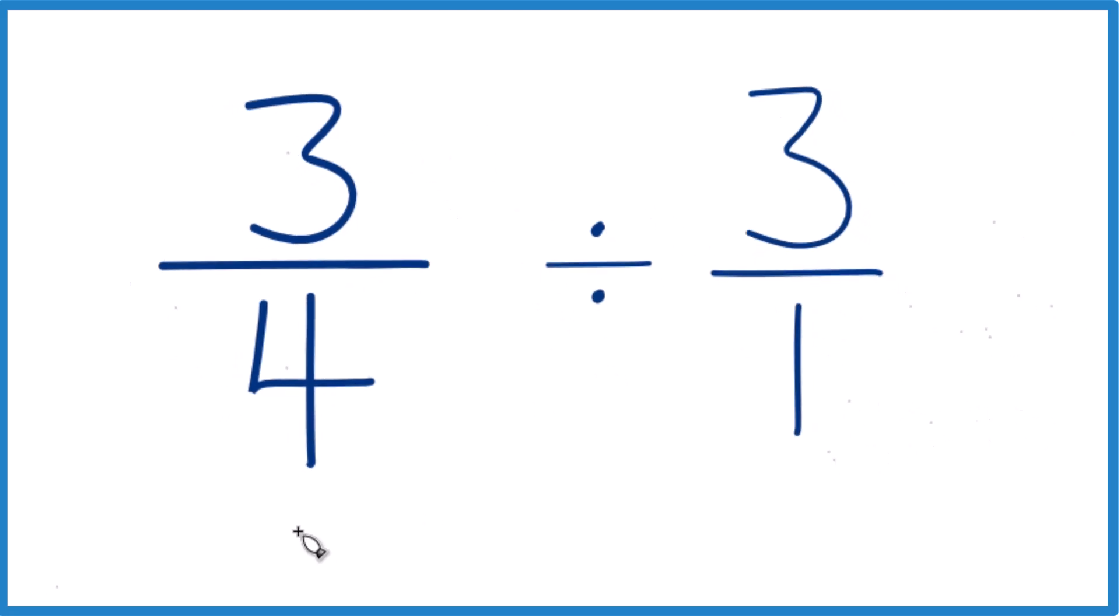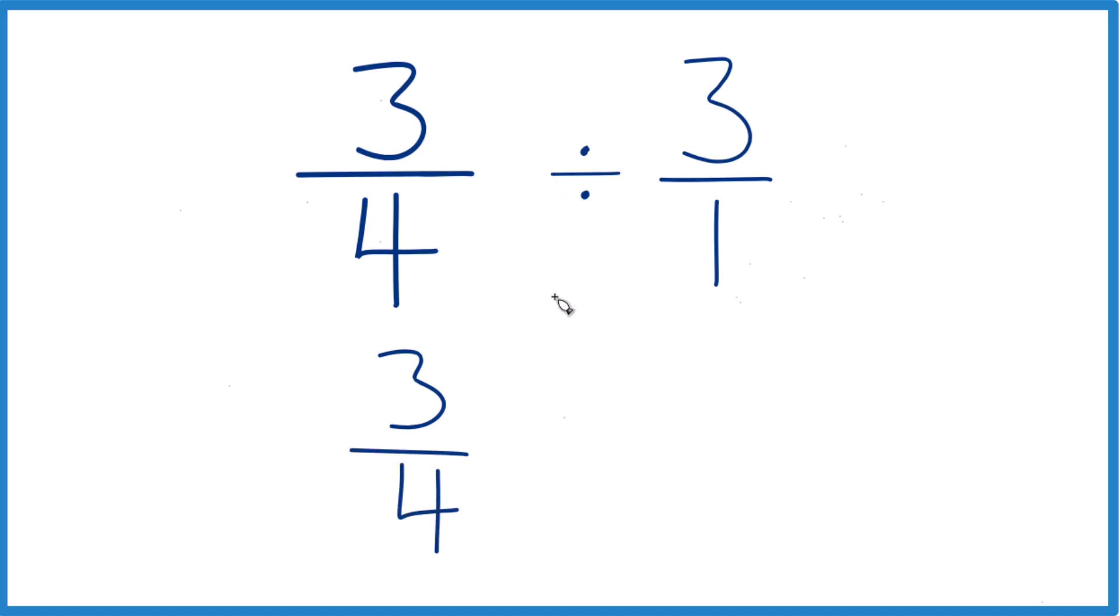What we can do is take our 3 fourths here, and instead of division, we're going to multiply by the reciprocal of 3 over 1. So the numerator comes to the bottom, denominator to the top, so we have 1 over 3, just 1 third.